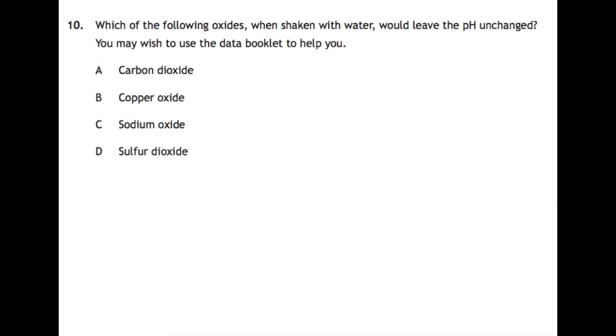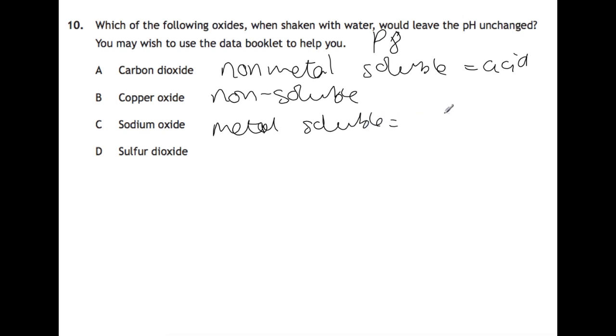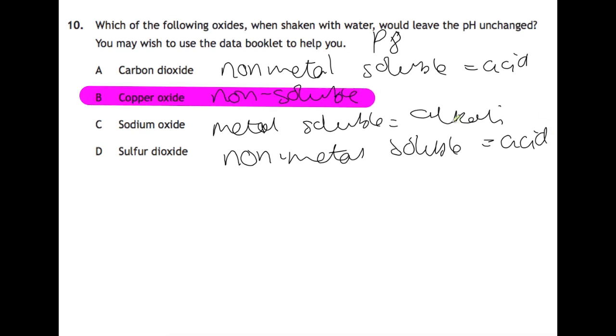Question ten: which of the following oxides, when shaken with water, would leave the pH unchanged? This means that you need the oxide to be non-soluble. You're looking in the data book, page 8, you've got a solubility table there. Carbon dioxide is soluble, and it's a non-metal, so that means you'll form an acid, form carbonic acid. Copper oxide is non-soluble, so it should be the answer. Sodium oxide is a metal oxide, and it is soluble. Metal oxides form alkalis when they are soluble. And sulfur dioxide is a non-metal and soluble, so like carbon dioxide also forms an acid. So our answer is copper oxide, because it's non-soluble.